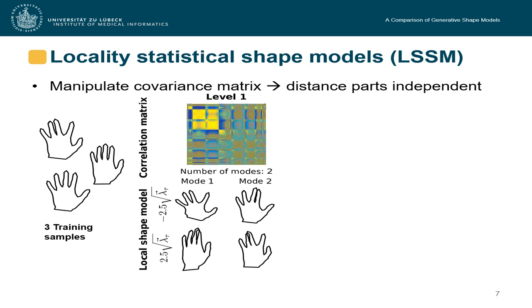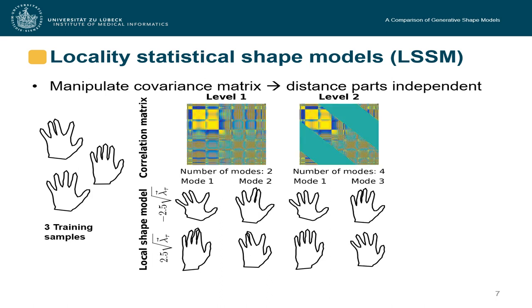This is done so by manipulating the covariance matrix. So if we have three training samples like shown here and a covariance matrix built from them, we now want to say that distant parts are independent from each other. This means that we can simply set their covariance to zero in the covariance matrix like this and they will become independent.